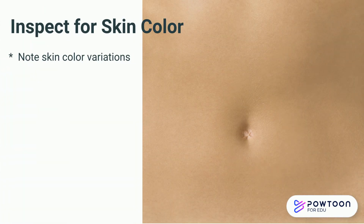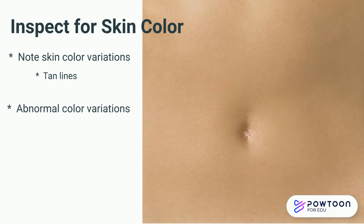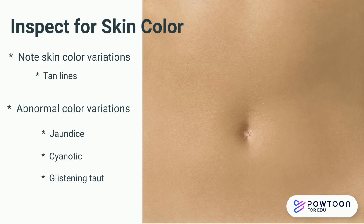Inspect the skin for color — it should be uniform with the rest of the body. Occasionally you might see something like tan lines. You would want to watch for anything abnormal, such as jaundice, which is the yellowing of the skin, cyanosis, or if it's glistening or taut.